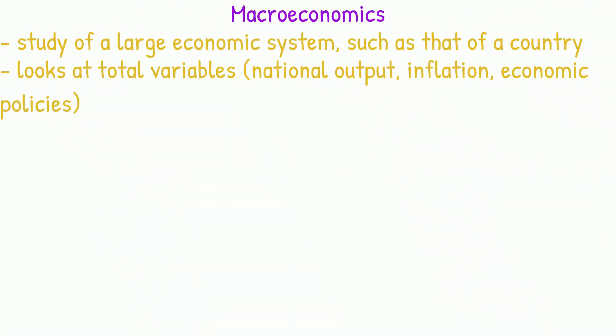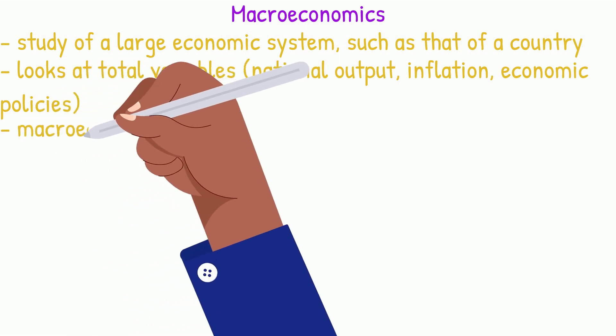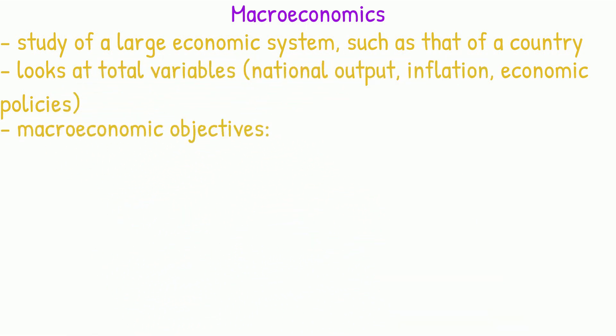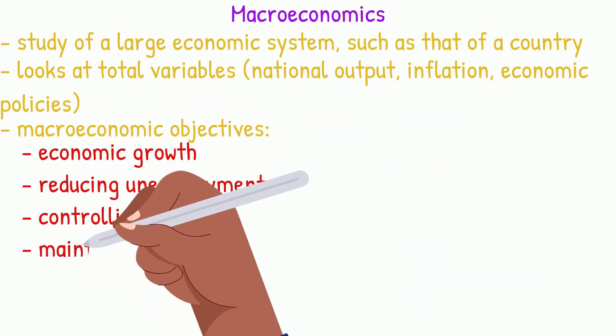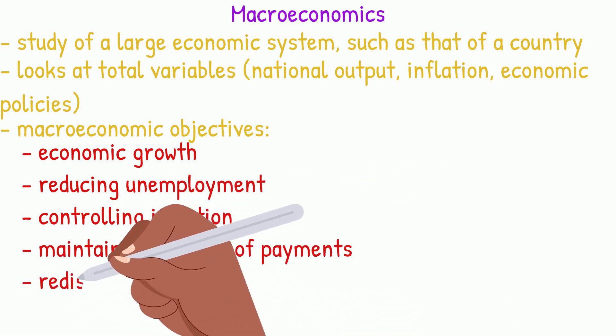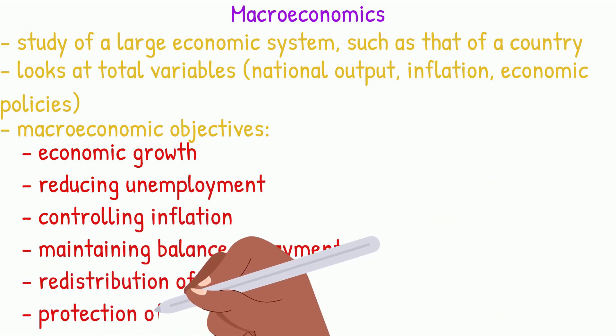The aims of the government when managing an economy is known as the macroeconomic objectives. Some key macroeconomic objectives are economic growth, reducing unemployment, controlling inflation, maintaining balance of payments, redistribution of income and protection of the environment.